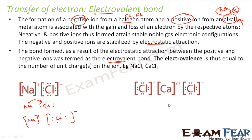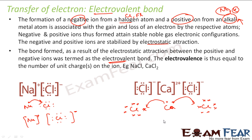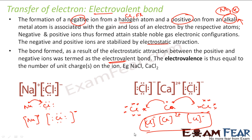Another example is CaCl₂. Calcium has 2 electrons in the outermost shell and chlorine has 7. Calcium easily gives 2 electrons, 1 to each chlorine. Calcium gets a 2+ positive charge, and each chlorine gets a negative charge. They are then held by electrostatic force of attraction. This kind of bond is called an electrovalent bond.